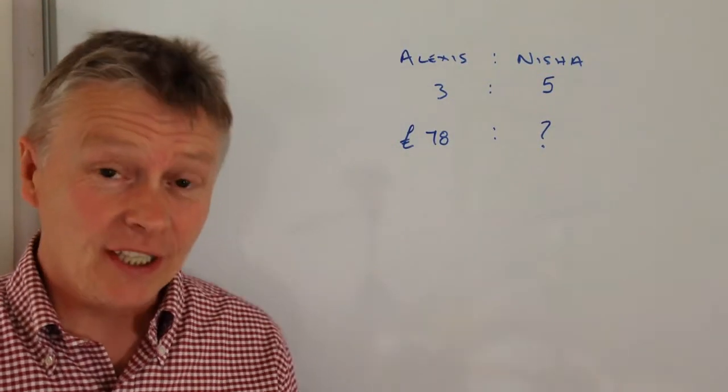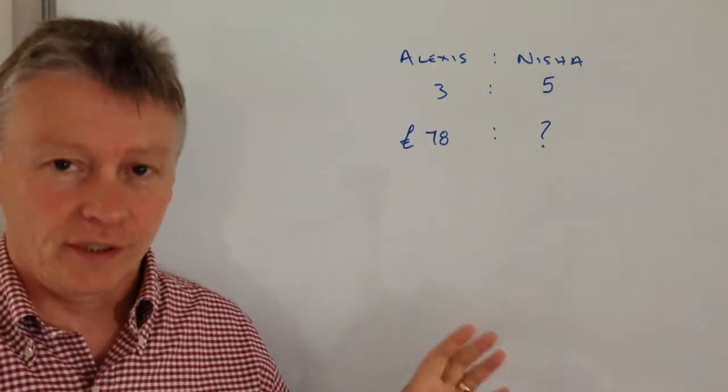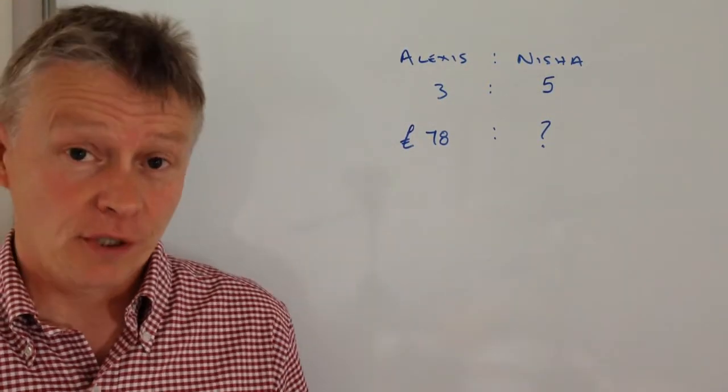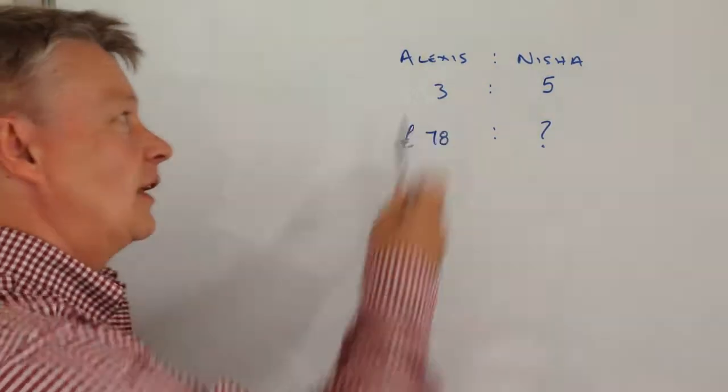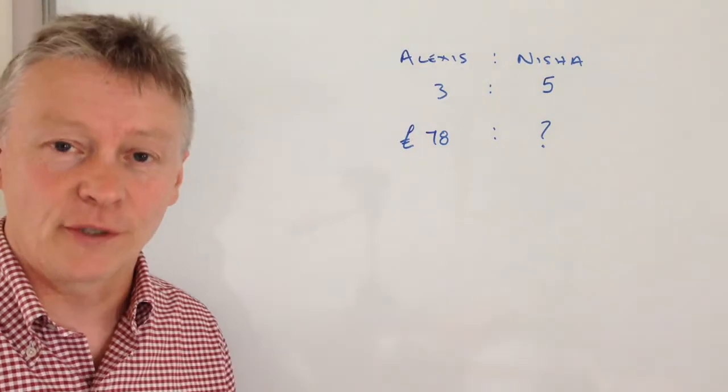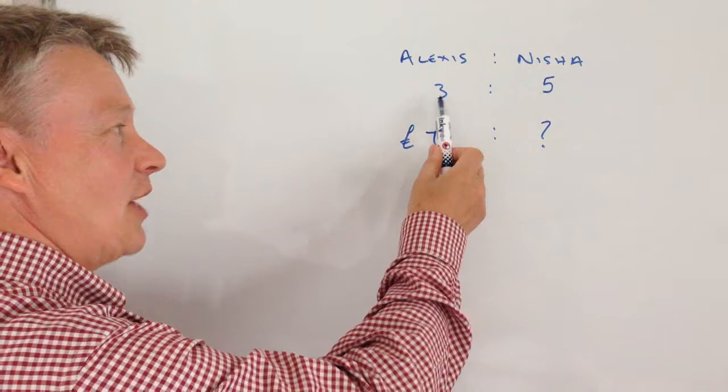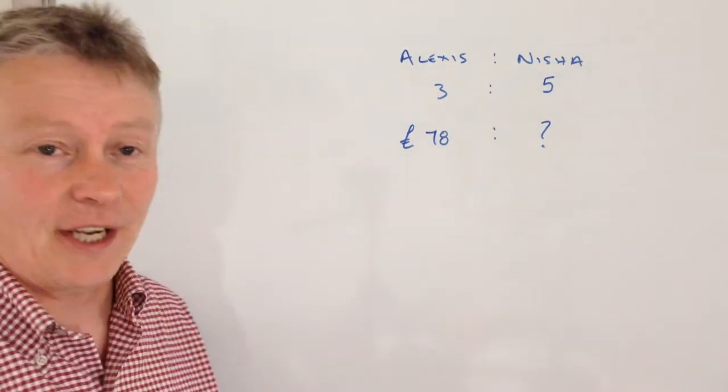Hi, in this playlist we're going to be dealing with ratio. They do tend to be quite wordy problems so I'm going to put the full question in the description box below. Essentially, with this question we've got Alexis and Nisha who are both doing a flat share and they're sharing a telephone bill. They agree to share it in the ratio 3 to 5. Alexis pays £78.